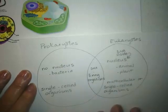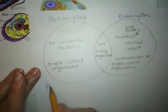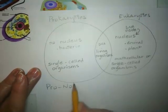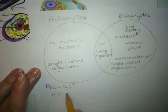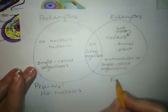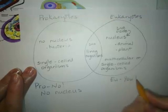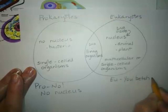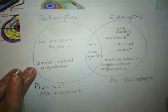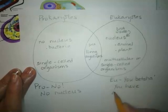The trick that we gave you at the very beginning was: pro-no, no nucleus. And we told you that 'eu,' spelled e-u, was 'you betcha' — and betcha isn't a real word, we just have fun with that one — you betcha you have a nucleus.